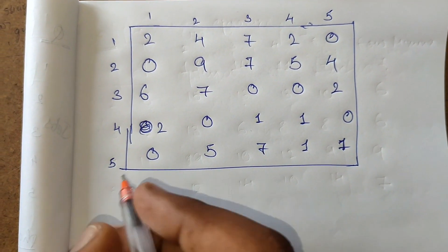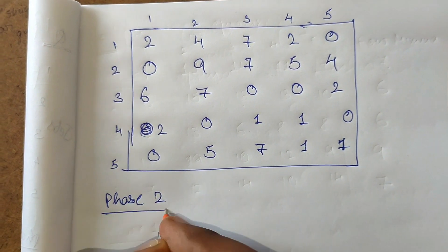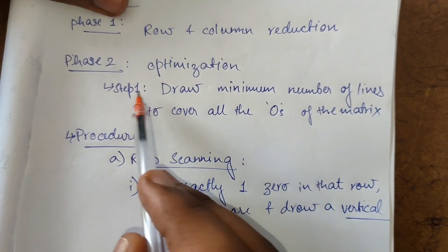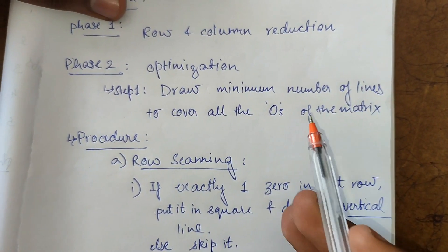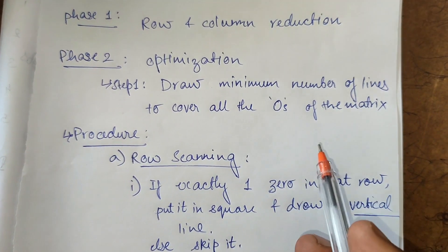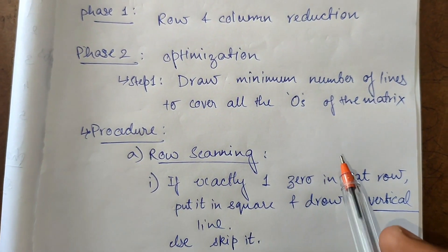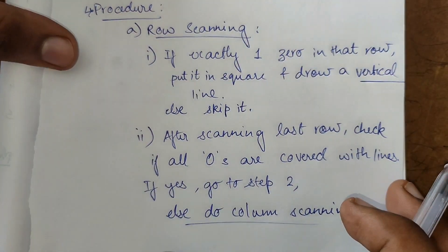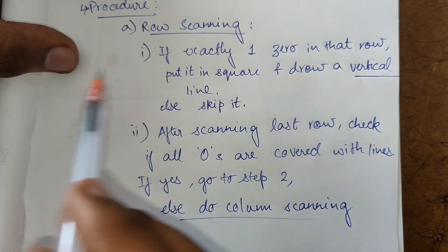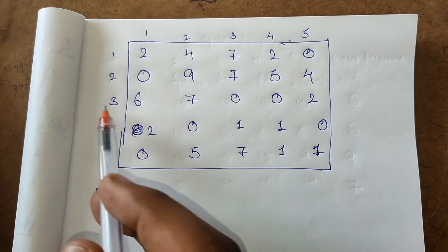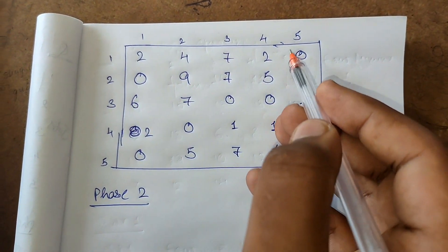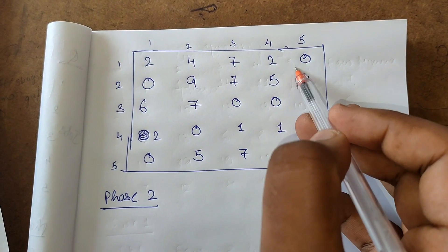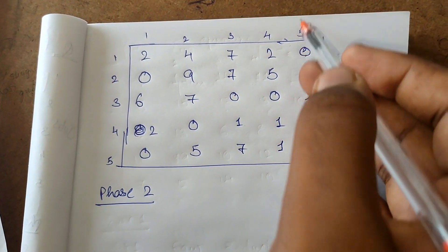We now move to phase two, which is optimization. The goal is to draw the minimum number of lines to cover all zeros in the matrix. This is done in two steps: row scanning and column scanning. In row scanning, we iterate row by row. If there is only one zero in a row, we put it in a square box and strike off that whole column by drawing a vertical line.